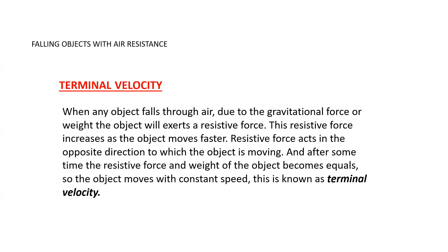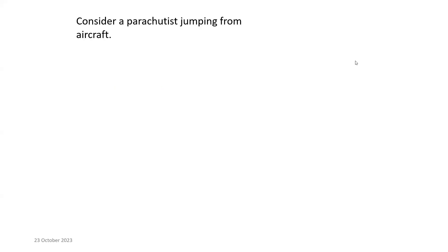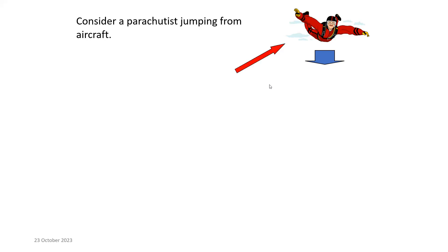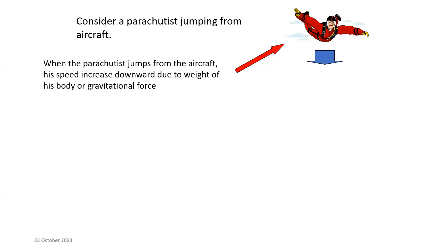This topic is about falling objects with air resistance — the more practical case. Without air resistance you would need a perfect vacuum, but now with air resistance, consider the motion of a parachutist jumping from an aircraft. The moment he jumps, the only force acting on him is his weight, so his speed increases due to the gravitational force acting on the object.